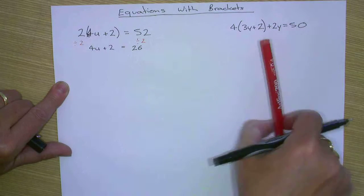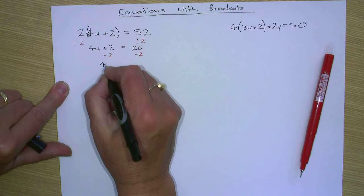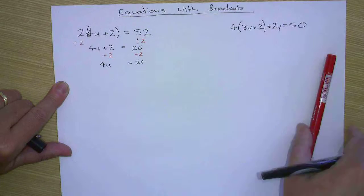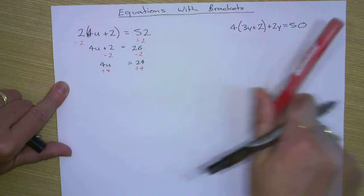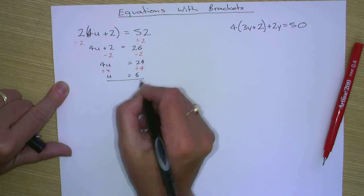Then we subtract two from both sides, four u equals 24. Therefore, when we divide by four, both sides, u equals six.